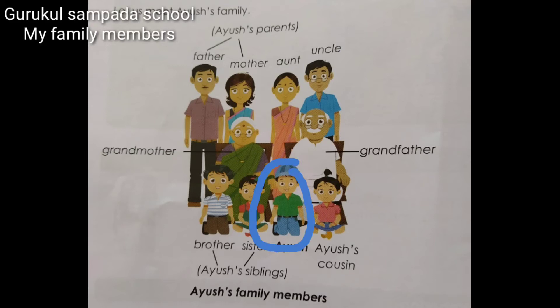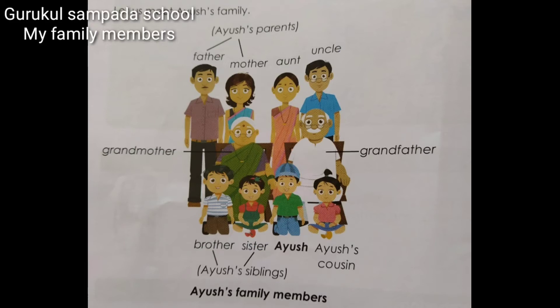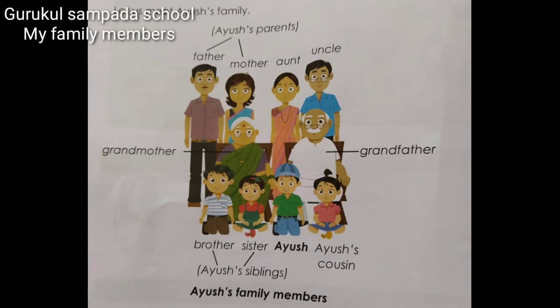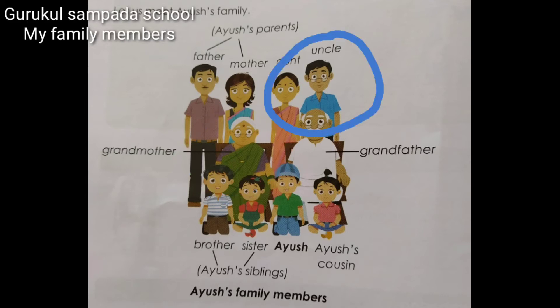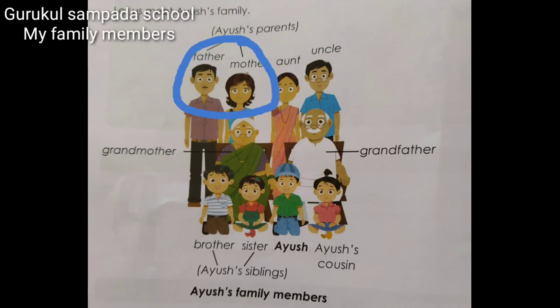This is Ayush. These are Ayush's brothers and sisters. This is Ayush's cousin. This is Ayush's grandfather. This is Ayush's grandmother. These are Ayush's aunts and uncles. These are Ayush's father and mother.